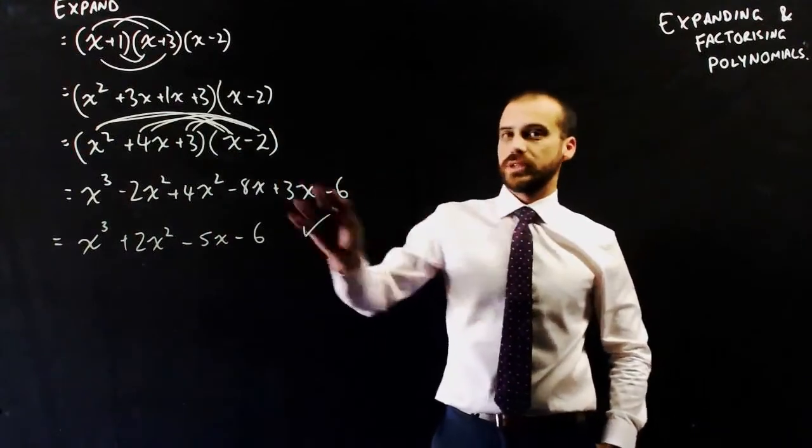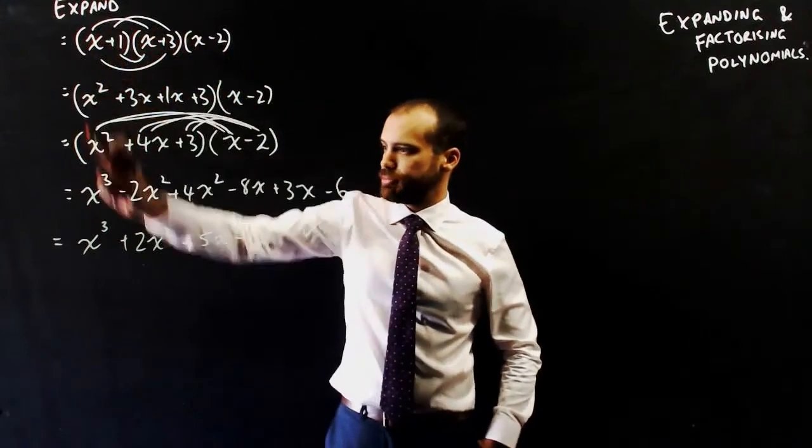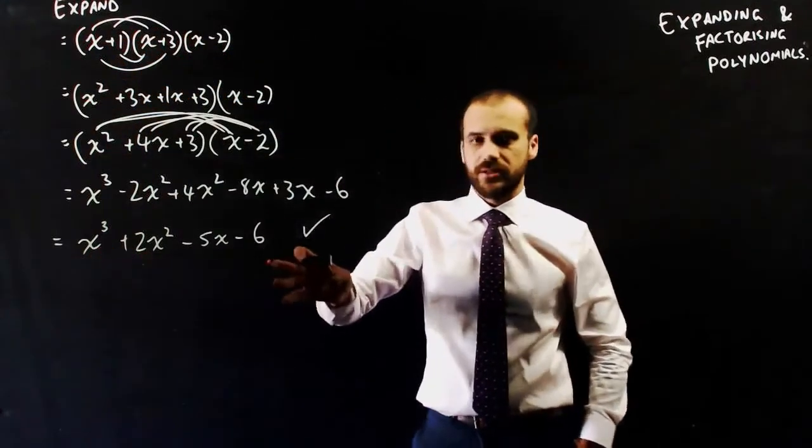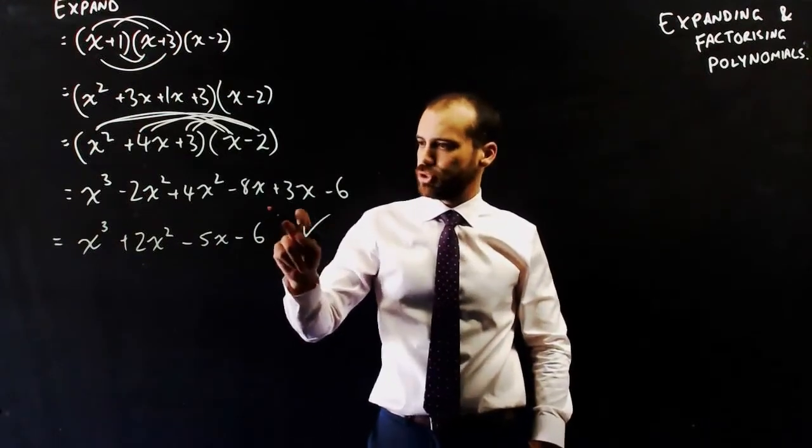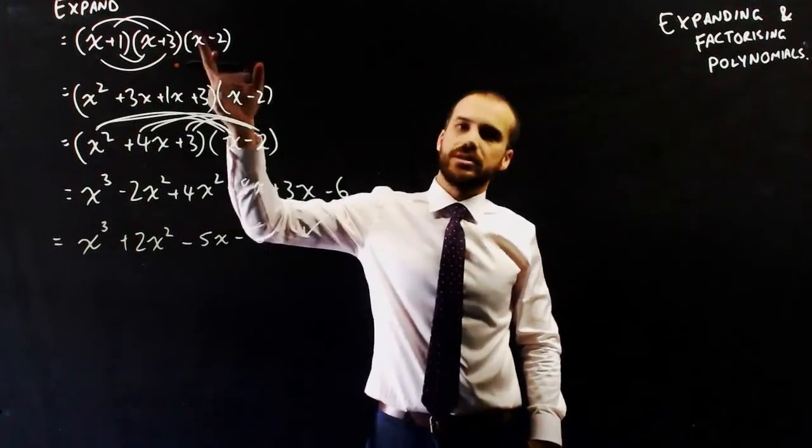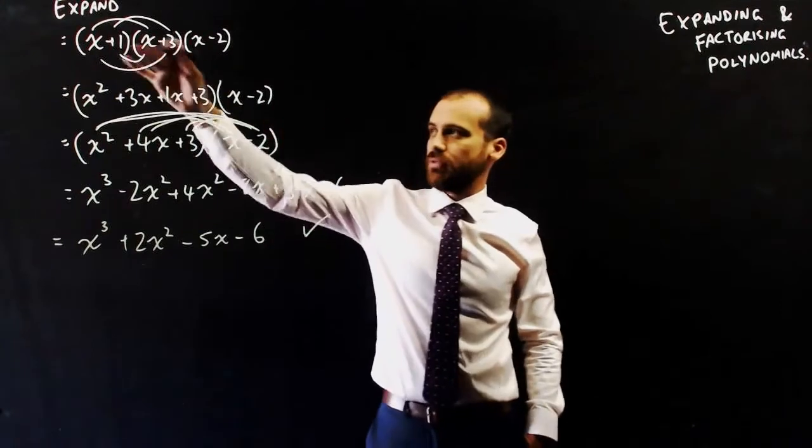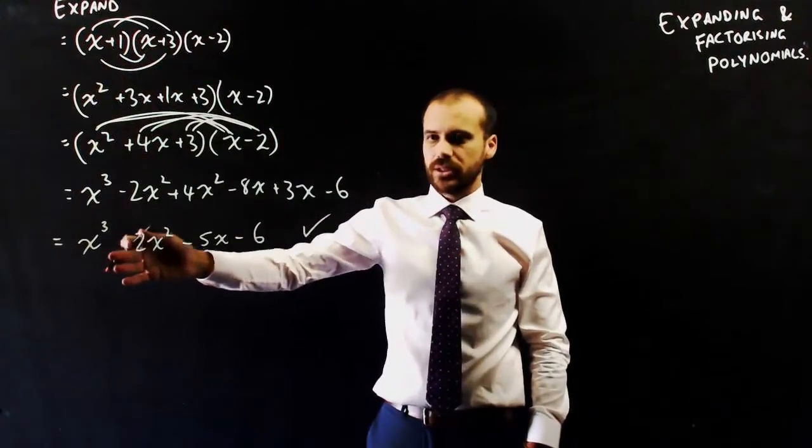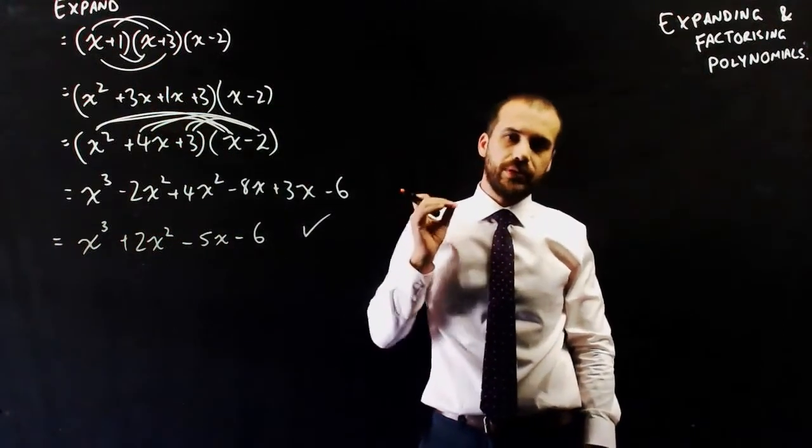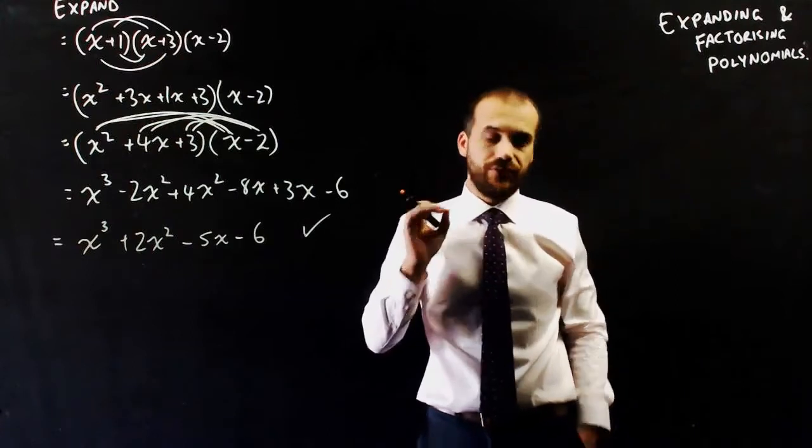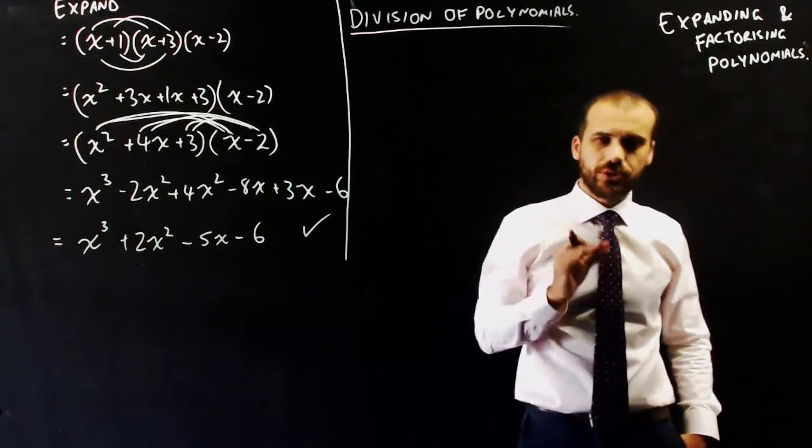Alright, so what I've done is take a cubic in factor form and I've expanded it until it's in expanded form. Now, the obvious question is, if I've done that, I should be able to reverse that whole process. Now, if you look at the process, I've been doing multiplying. So reversing that multiplication process probably requires some sort of division. So we're going to do division of polynomials and we're going to do it using the old school method of long division.